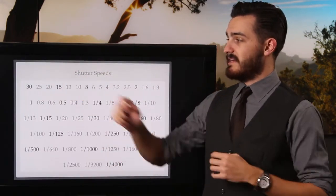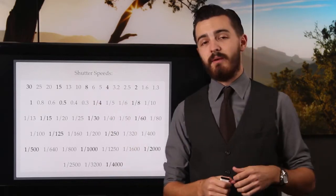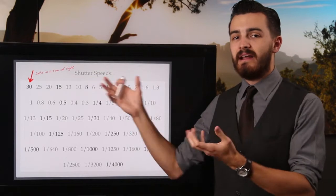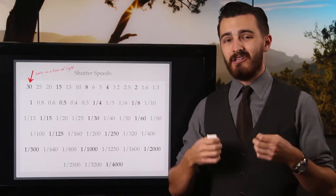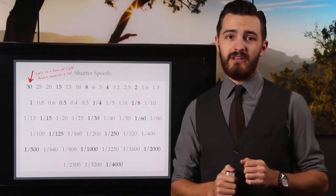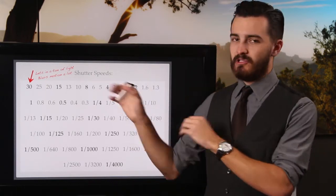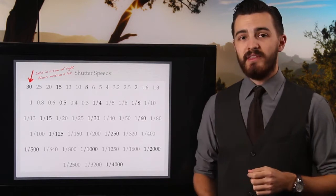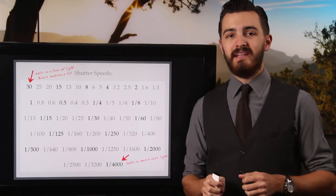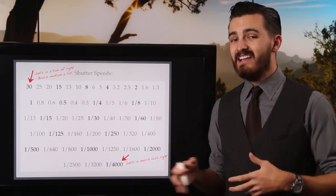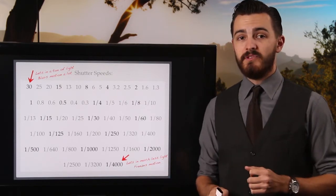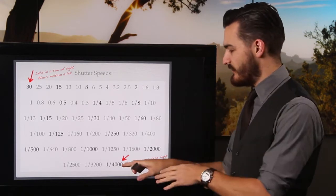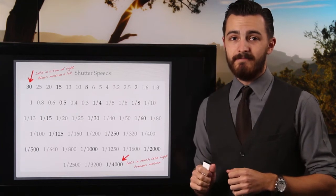We have 30 seconds all the way down to one four-thousandth. On your camera, 30 seconds would be represented as 30 with a quotes symbol — indicating full seconds. At 30 seconds we have a very long shutter speed, which lets in a lot of light and blurs motion a lot. Up at one four-thousandth, we have a fast shutter speed that lets in very little light, but it will freeze motion really well — great for photographing hummingbirds, wildlife, and sports. But keep in mind that fast shutter speeds are not going to let in nearly as much light, so you need a lot of it available.